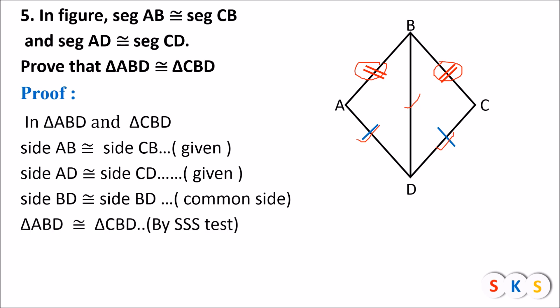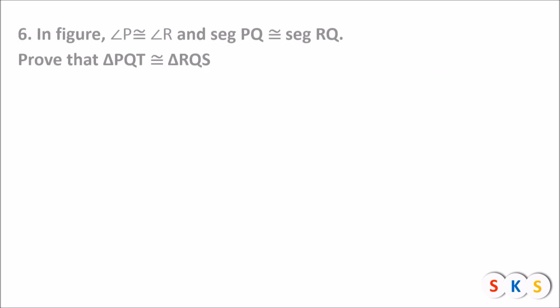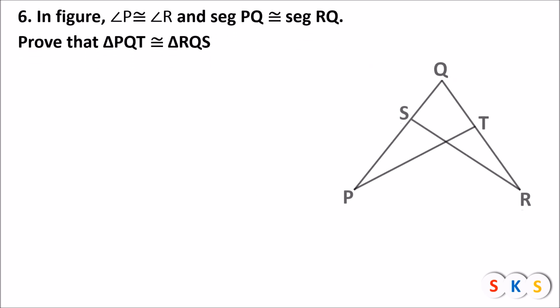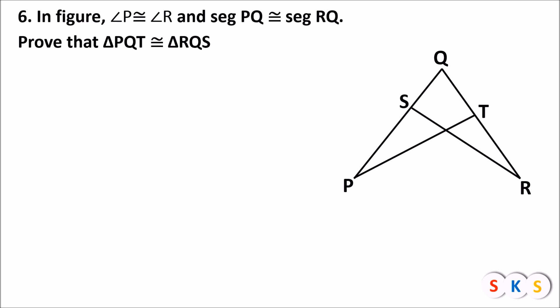In question number six, angle P is congruent to angle R and seg PQ is congruent to seg RQ. Prove that triangle PQT is congruent to triangle RQS. Let's see the proof.